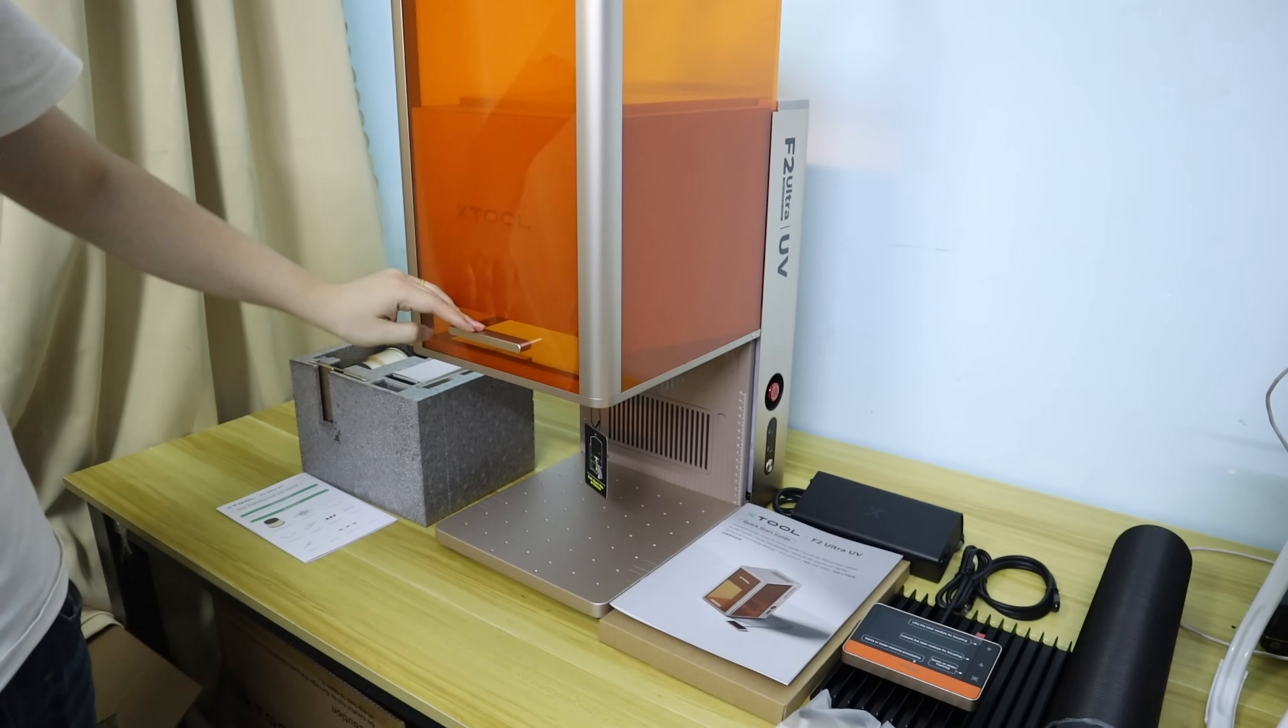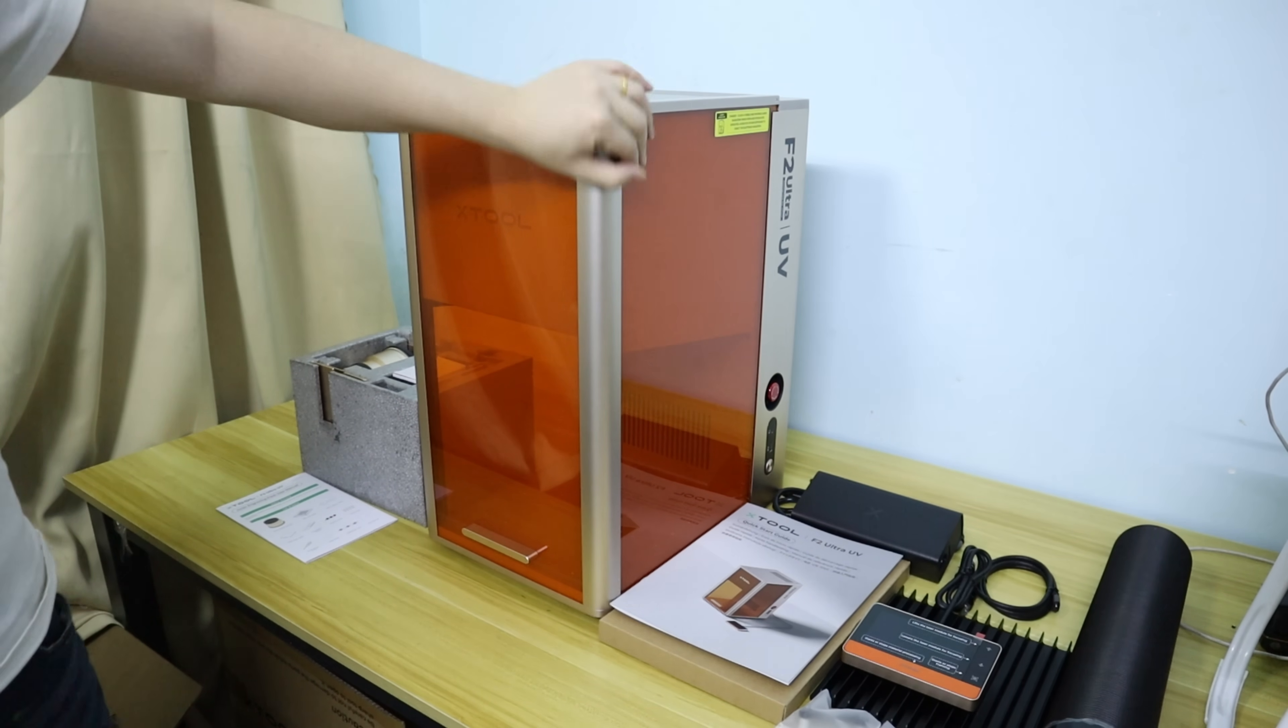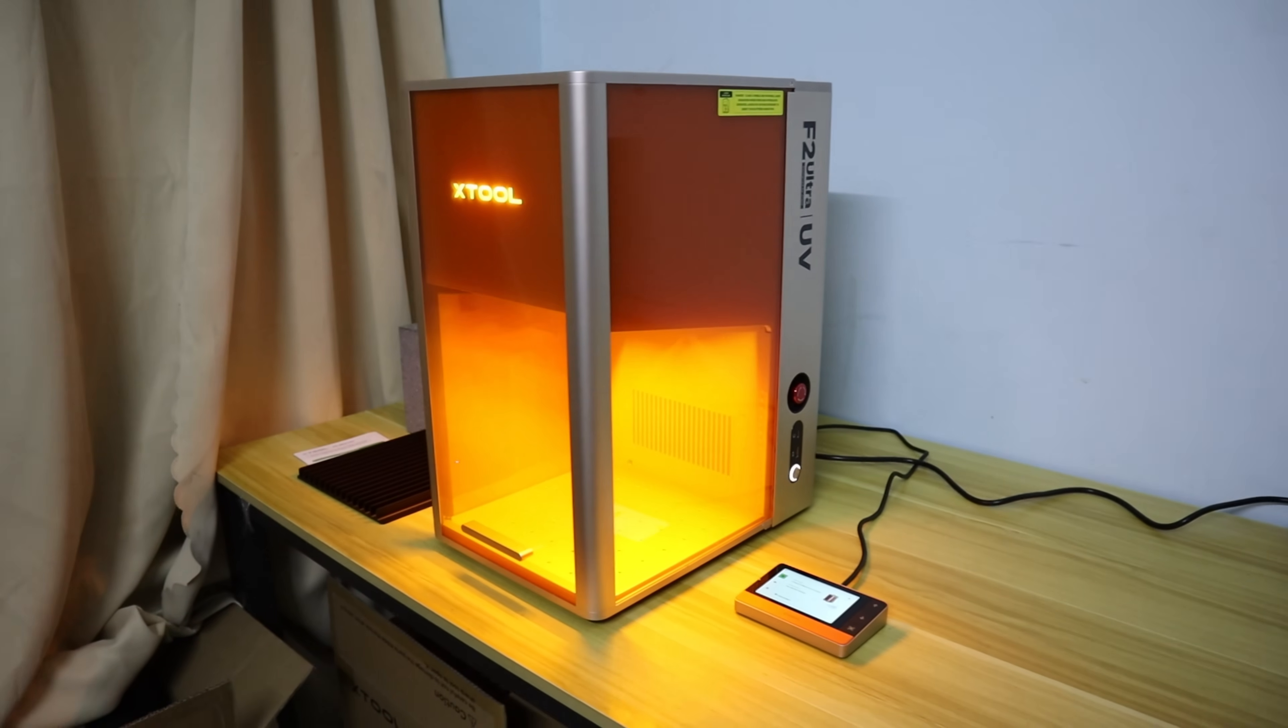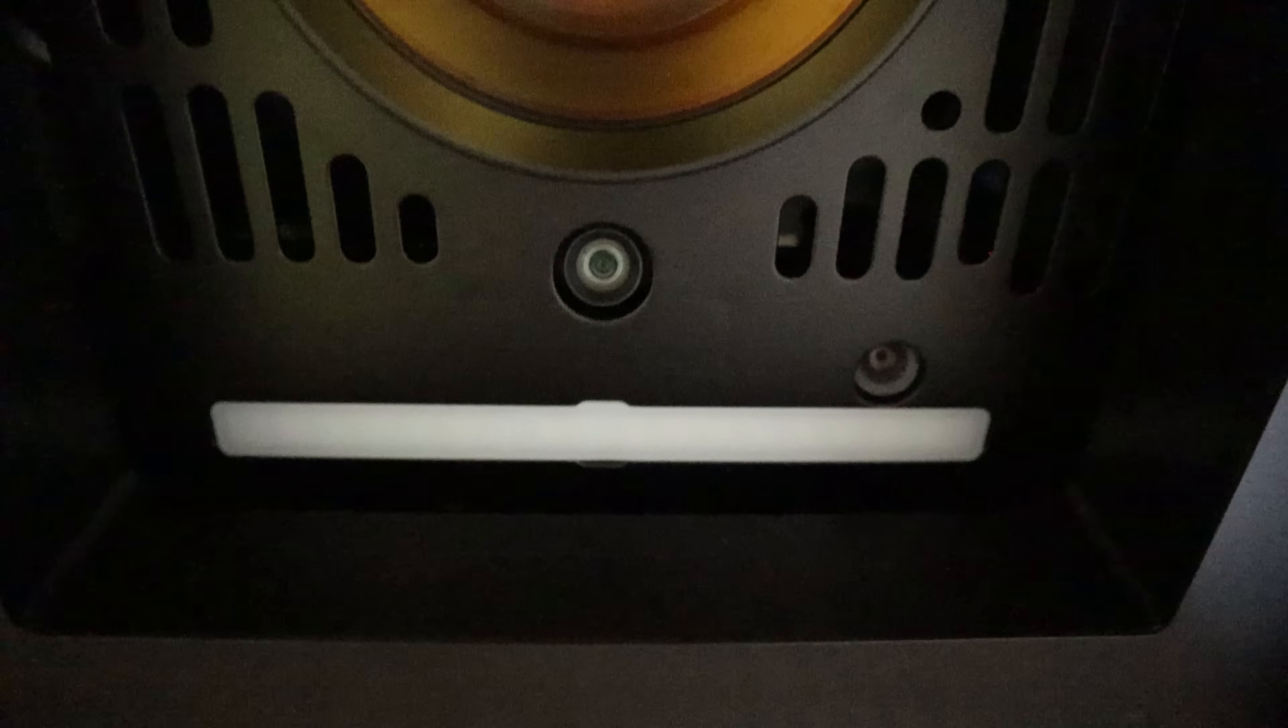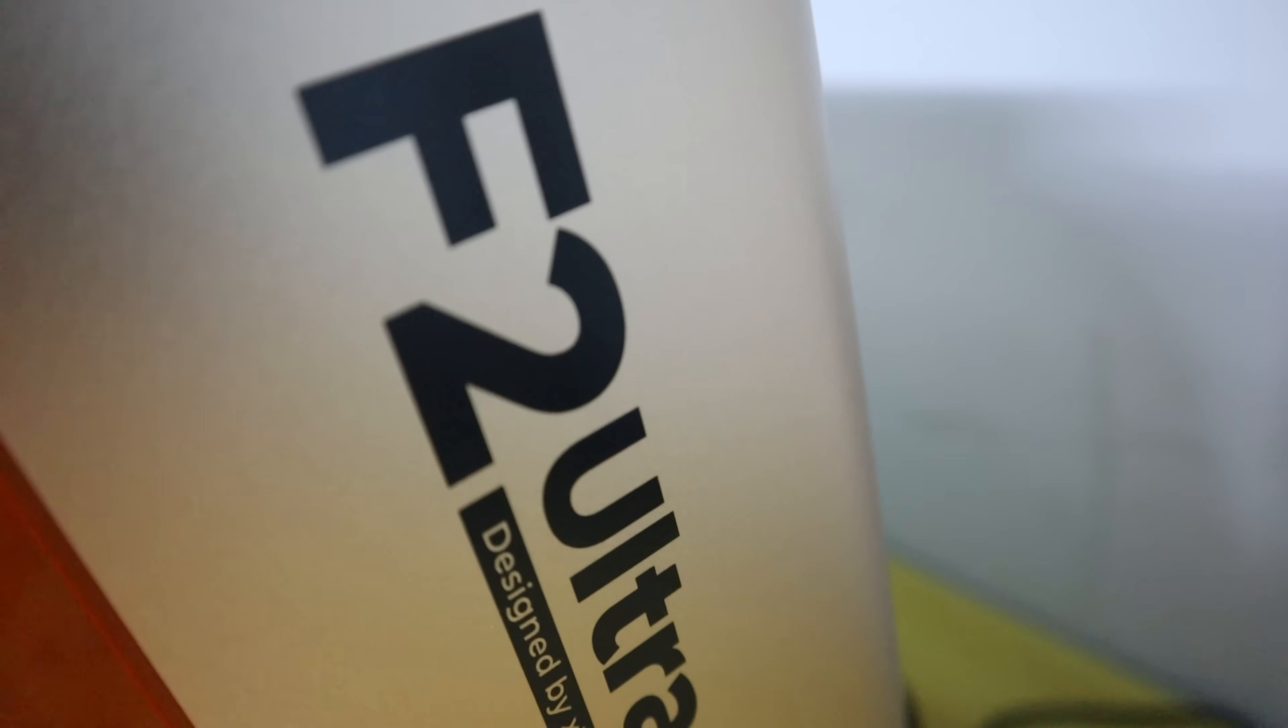The ACE2-F2 Ultra UV laser continues the aesthetic design language of the ACE2-F2 series, featuring a compact design. The machine dimension is 294 x 429 x 520 mm, and offers a maximum engraving area of 200 mm x 200 mm.